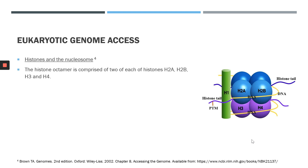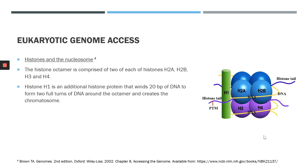The histone octamer is comprised of four major histones: H2A, H2B, H3, and H4. There are two copies of each of these histones in the octamer. In addition to the four core histones, we also have histone H1, which is further able to wind 20 base pairs of DNA. This allows for two full turns of DNA to form around the core histone octamer. These nucleosomes then combine to form the chromatin fibre.